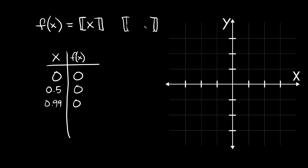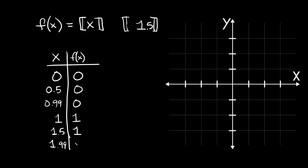If we plug in 1, it's already a whole number so it stays as 1. Then 1.5 rounds down to 1, and 1.99 also rounds down to 1. So we can see the pattern forming in our table.